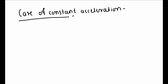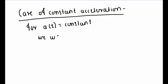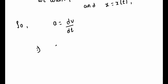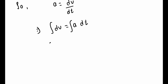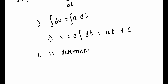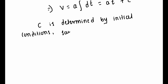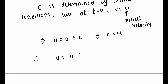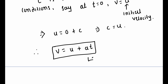Let's consider a special case when the acceleration of the particle is constant. We want to derive equations giving the variation of velocity with time and the variation of position with time. Starting with A = dv/dt, this implies dv = A dt. Integrating both sides, we get v = A·t + C. This constant is determined by the initial condition: at t = 0, v = u, so C = u. The final solution is v = u + A·t. This equation gives us the variation of velocity with time.